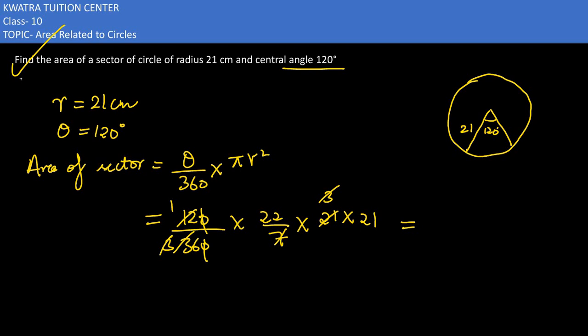So I have 22 into 21, which is nothing but 462 cm². So that is nothing but the area of a sector whose radius is 21 and central angle is 120 degree.